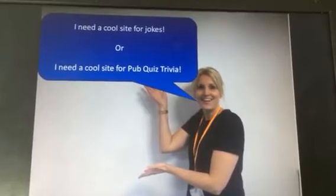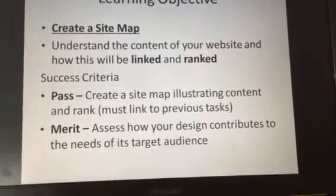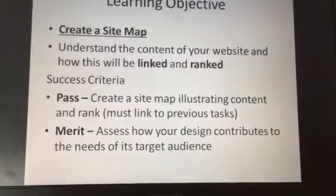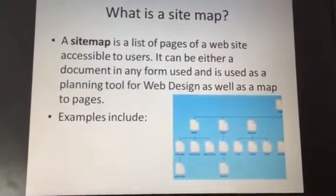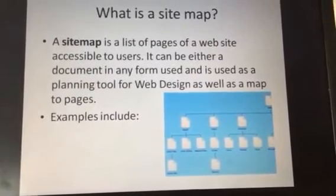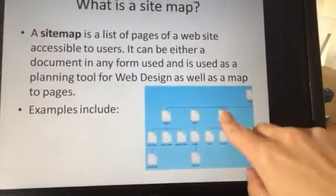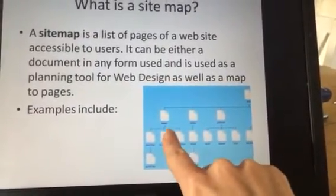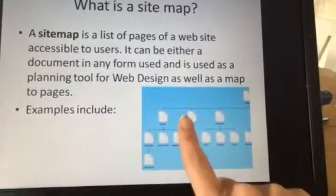We need a cool site for jokes or pub quiz trivia. The success criteria for creating a site map: illustrate its content and rank. Everything must link — everything must link. A site map is basically a list of all the pages in the site, ranked with the homepage followed by subsequent pages linked into that page. These pages would have a link from that page, so each one of these lines represents a link. I will be looking and double-checking that.